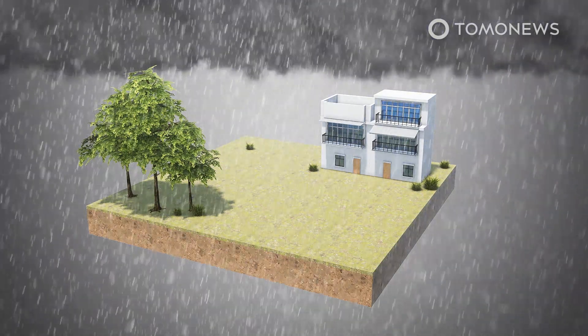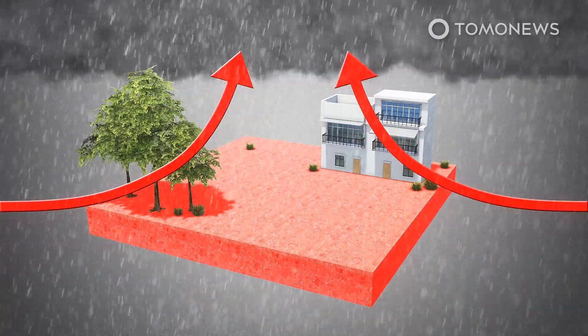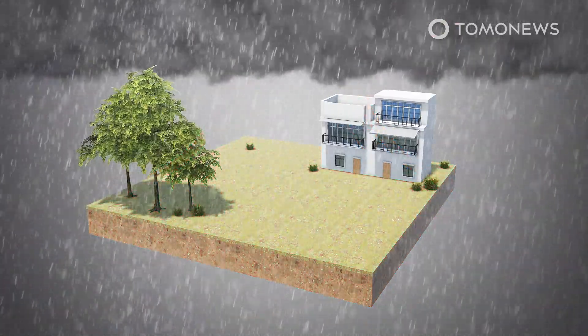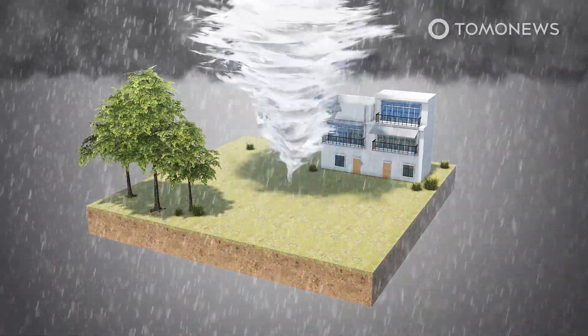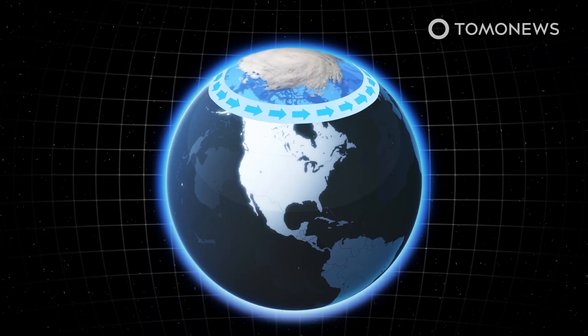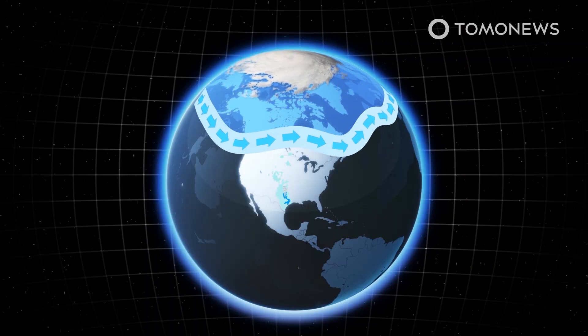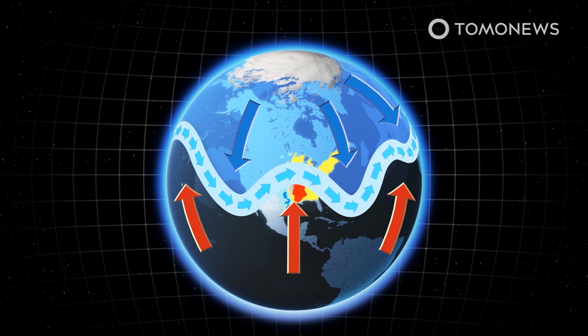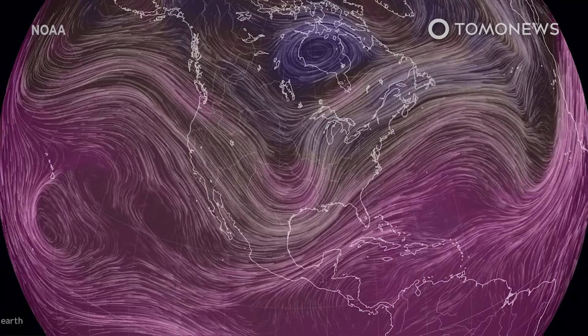Tornadoes are primarily fueled by warm, moist air from strong winds that shift direction as they rise up, and this could be affected by climate change because the jet stream, air currents in the upper atmosphere that influence weather patterns, is known to be affected by rises in greenhouse gas emissions in the atmosphere.